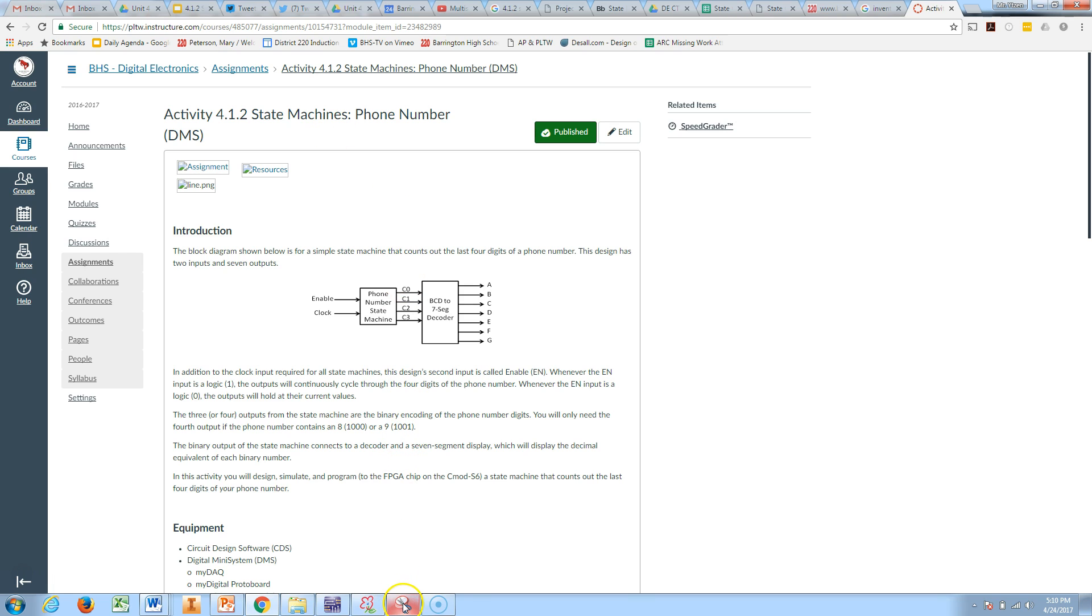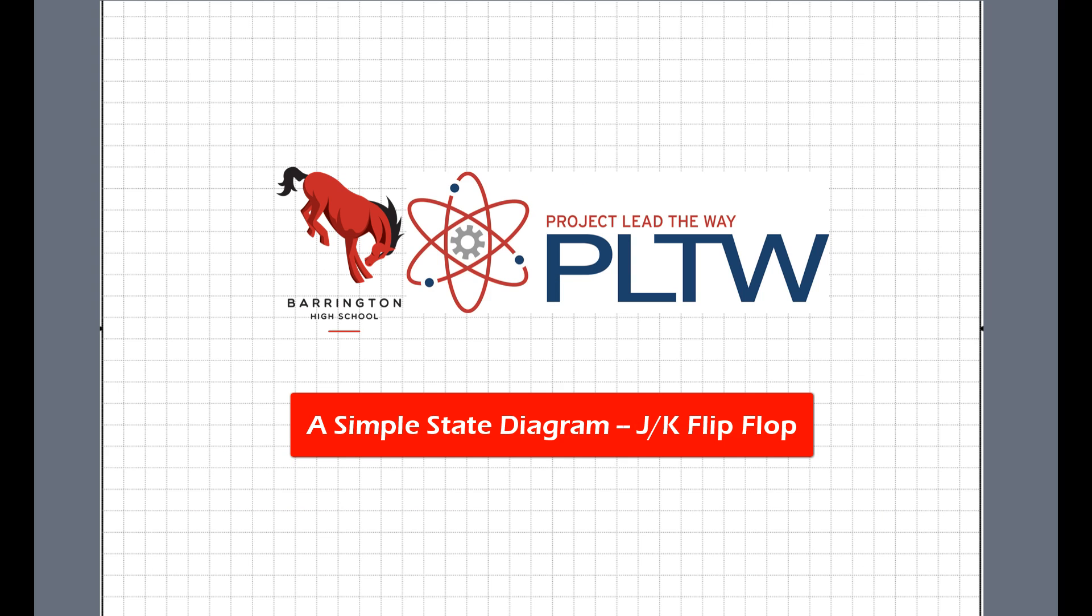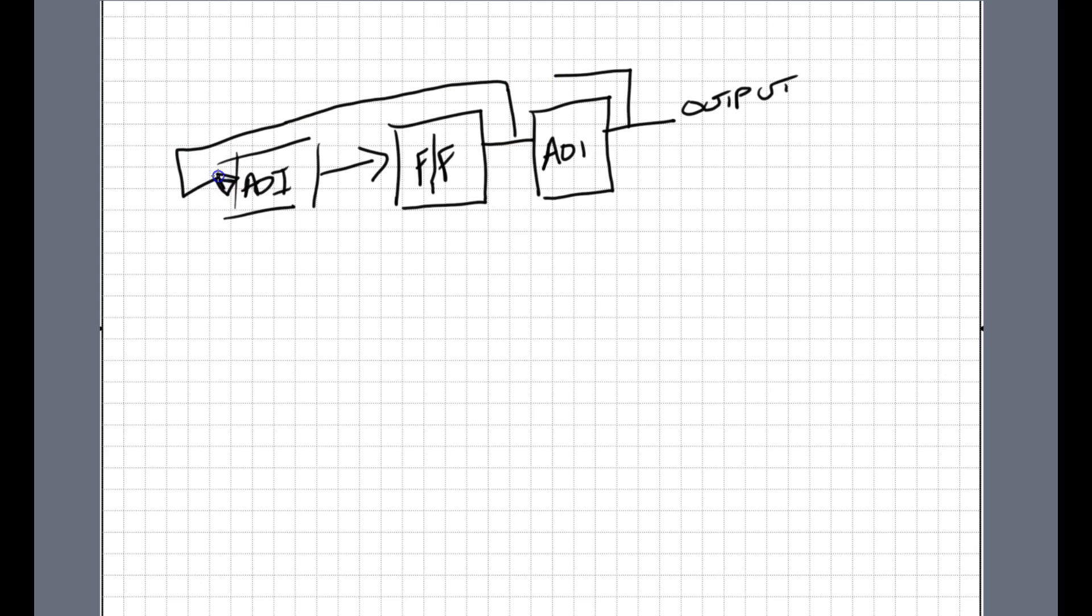So first, let's talk about what a state machine is. A true state machine is going to start with some combo logic, some AOI logic, and it's going to go into some sequential, or really into some flip-flops, some storage device. It's going to be stored, and then that data is going to pass through some additional AOI logic, some additional combo logic, before we get our output. And somewhere in here, either here or here, after the flip-flop, we feed back into our original AOI logic and cycle back through.